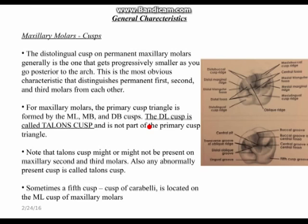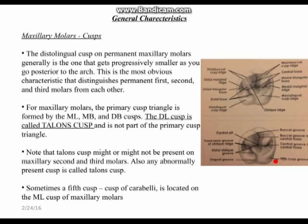Talon's cusp may or may not be present on maxillary second and third molars. Any abnormally present cusp is called Talon's cusp. So the distolingual cusp grows smaller as we go more posterior and may not even be present. Sometimes a fifth cusp — the cusp of Carabelli — is located on the mesiolingual cusp of maxillary molars. You can see it here: the groove separates the main cusp from the cusp of Carabelli, and it is usually found on the maxillary first molar.